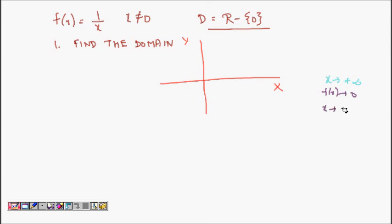And when x tends to 0 from the right hand side, f(x) tends to plus infinity. So this graph will be something like this.